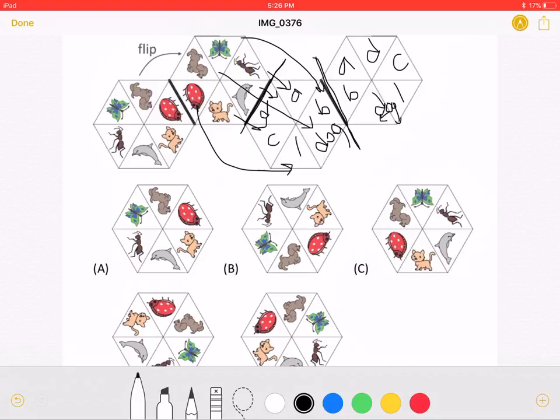Now we must look at our answer choices. And we can see that answer choice B has the butterfly over here, the ant over here, the dolphin, cat, ladybug, and the dog. That means answer choice B must be correct.